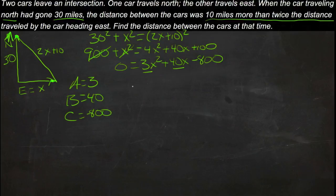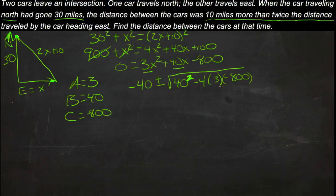So we have negative b plus or minus the square root of b squared minus 4ac, 4ac all over 2a.